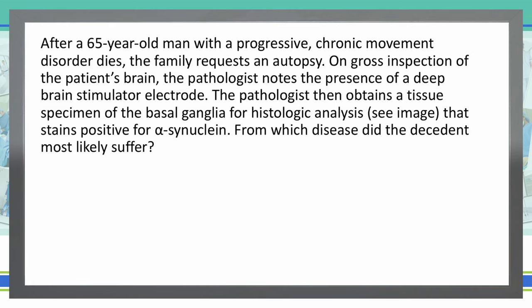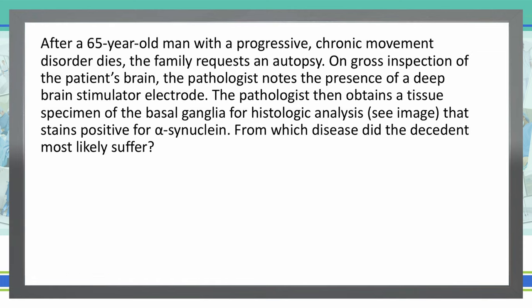After a 65-year-old man with a progressive chronic movement disorder dies, the family requests an autopsy. On gross inspection of the patient's brain, the pathologist notes the presence of a deep brain stimulator electrode. The pathologist then obtains a tissue specimen of the basal ganglia for histological analysis that stains positive for alpha-synuclein. From which disease did the decedent most likely suffer?